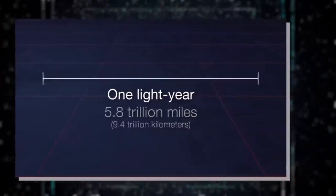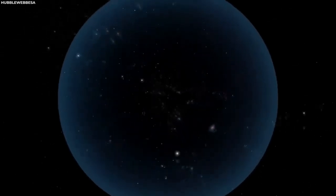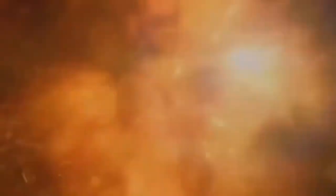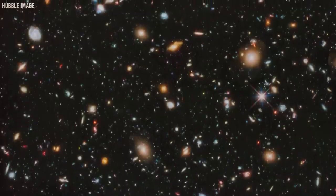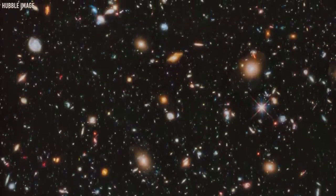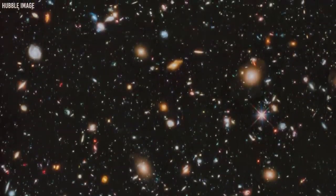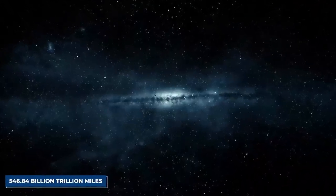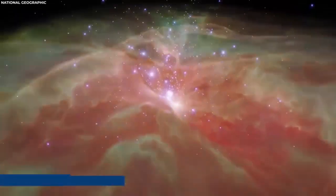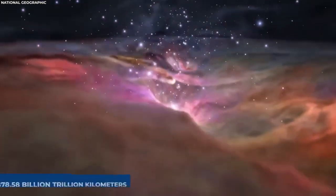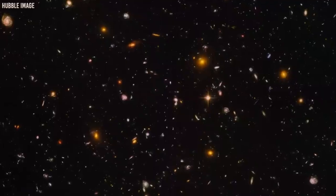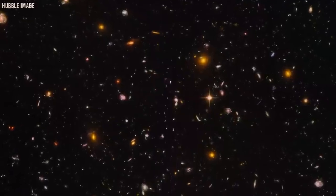Now, the concept of the edge of the universe is a mind-boggling topic that has fascinated scientists, philosophers, and thinkers for ages. We have all sorts of theories about what lies beyond, but the truth remains elusive. However, there are three theories that stand out. The first theory is that the universe goes on forever, with no end in sight. This theory is based on the cosmological principle, which states that the universe is isotropic, meaning that it looks roughly the same in every direction. If this principle holds true, it implies that the universe stretches on endlessly without a boundary.